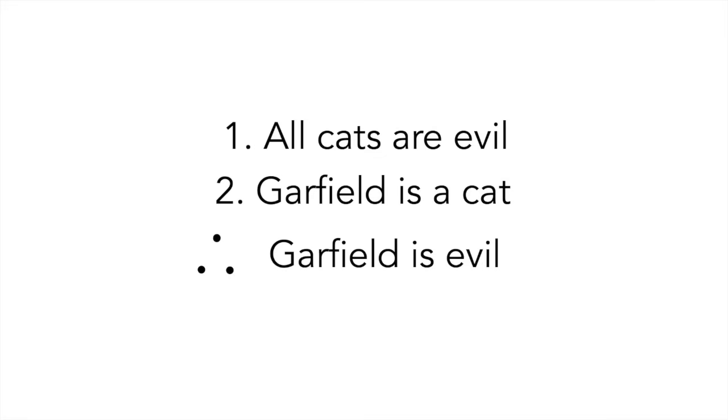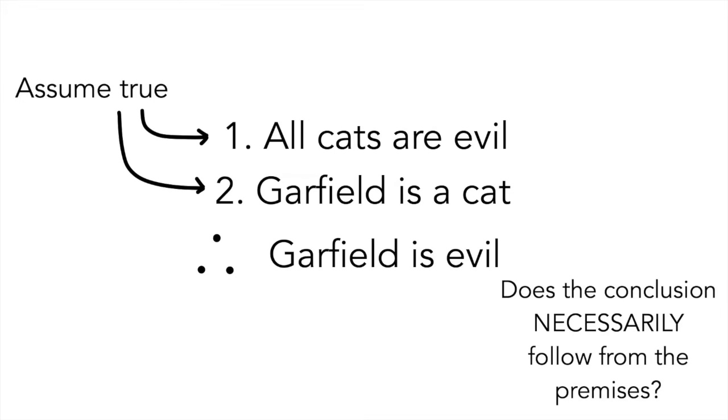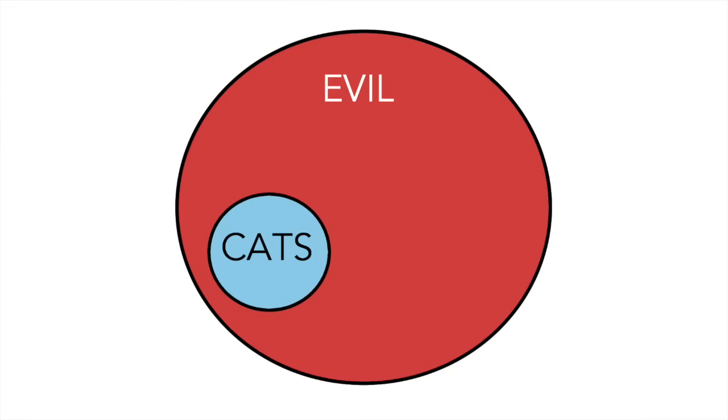This might sound weird, so let's get an example going. All cats are evil. Garfield is a cat. Therefore, Garfield is evil. So again, it may or may not be true that all cats are evil, or if Garfield is a cat, but that's all irrelevant. We're only concerned here with whether the conclusion necessarily follows from the premises. Now, I'll explain an actual test to test for validity later in this video, but here's just an illustration I made to show how this argument is valid. All cats are evil, so the entire category of cats fits into the larger category of evil. Garfield is a cat, so he fits into the cat category. And since the cat category is in the evil category, it necessarily follows that Garfield is evil. Therefore, this is a valid argument.